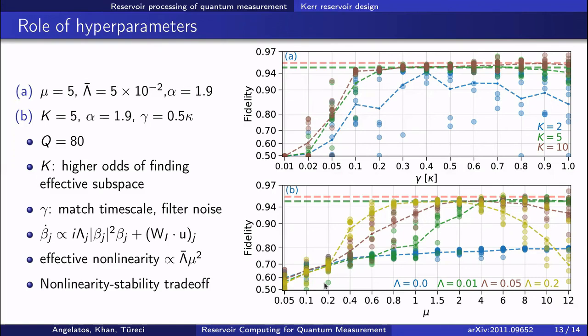In the lower plot, I show the performance as one varies both the non-linearity and the input strength. The effective non-linearity of the Kerr network is actually a product of these quantities, and so it's important that this effective non-linearity be large enough to use the dimensionality of the reservoir, but be also small enough that the reservoir is able to settle into unique attractors over the measurement timescale and in the presence of noise.